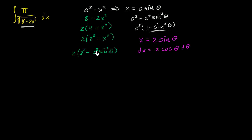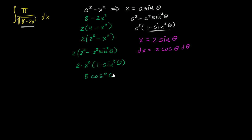And now we can factor out the 2 squared. So this is going to be 2 times 2 squared times 1 minus sine squared theta. 2 times 2 squared is just 8 times cosine squared theta. That's what we have under the radical.